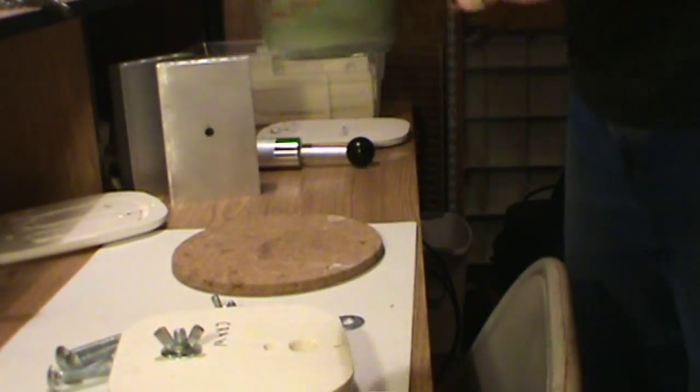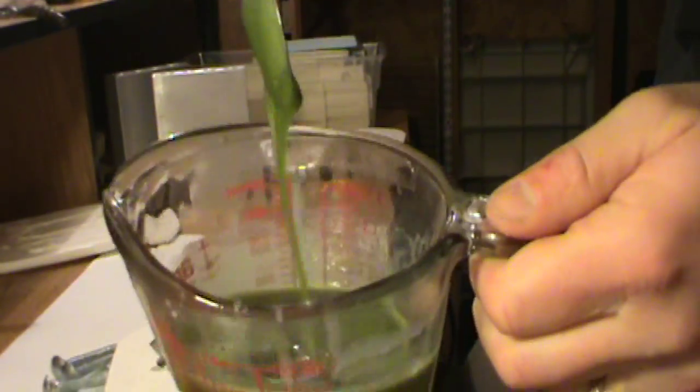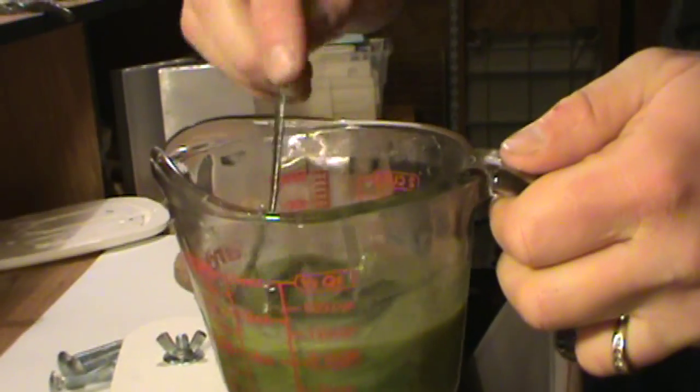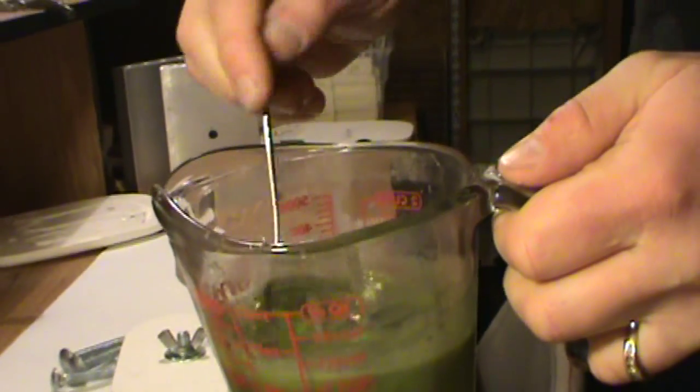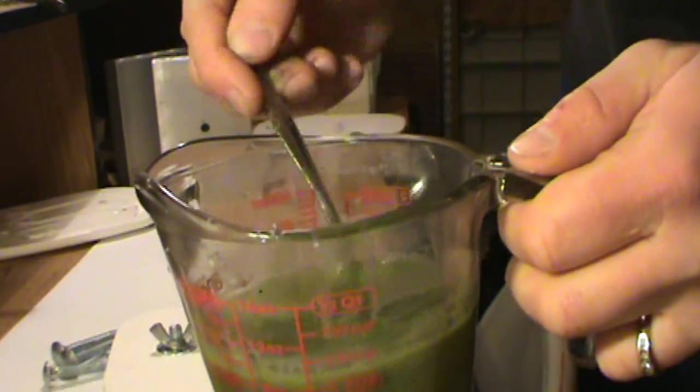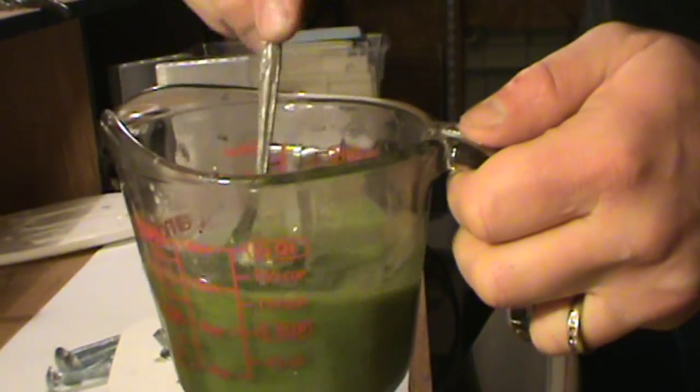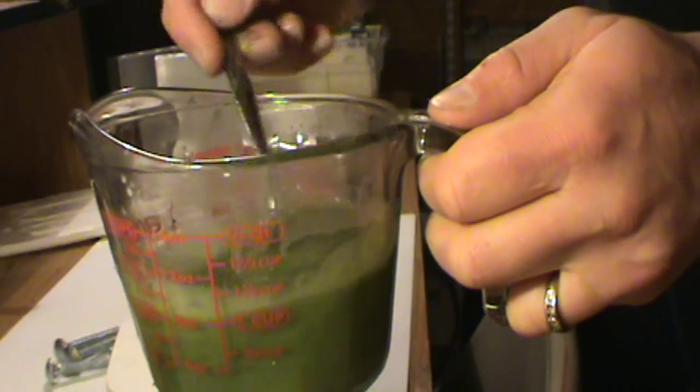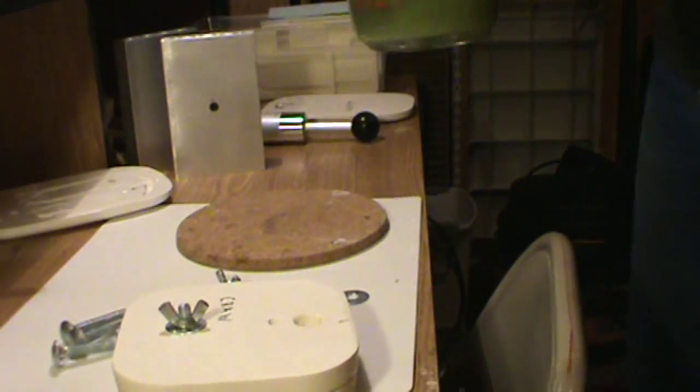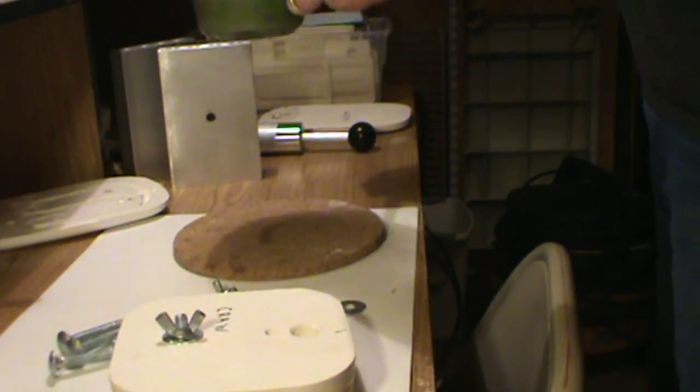Okay now we're starting to change, starting to change color or texture. It's starting to get a little thicker. It's about half water and half melted plastic. We still got a ways to go yet. It's going to get even thicker than that.